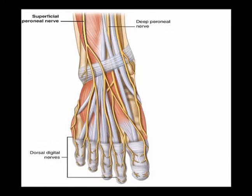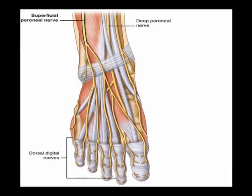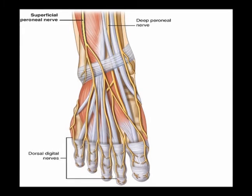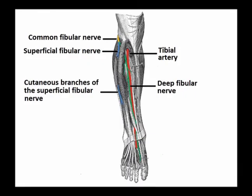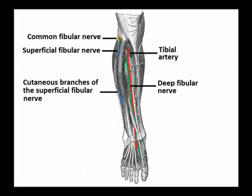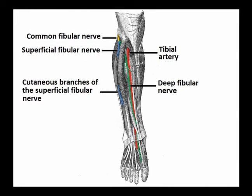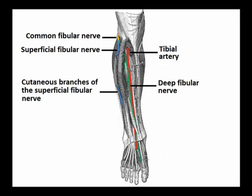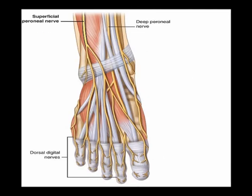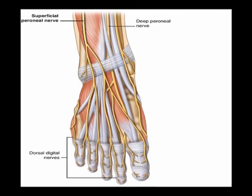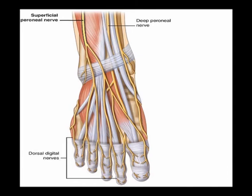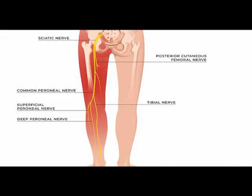The superficial peroneal nerve supplies motor innervation to the lateral compartment of the lower leg, which is responsible for foot eversion. The deep peroneal nerve supplies motor innervation to the anterior compartment, responsible for ankle dorsiflexion, toe extension, and ankle inversion.